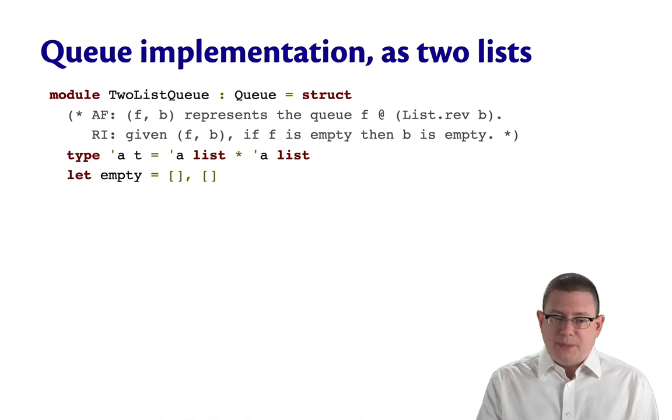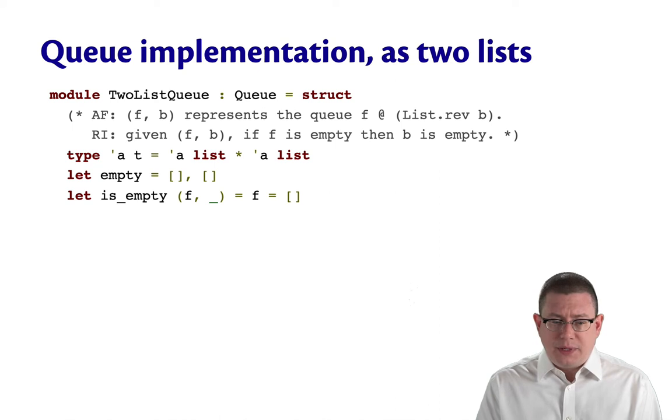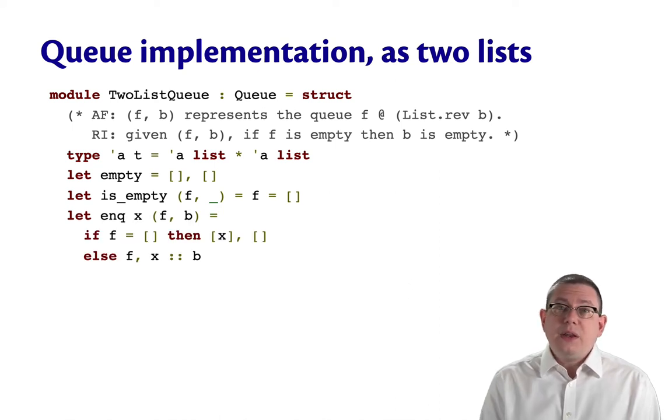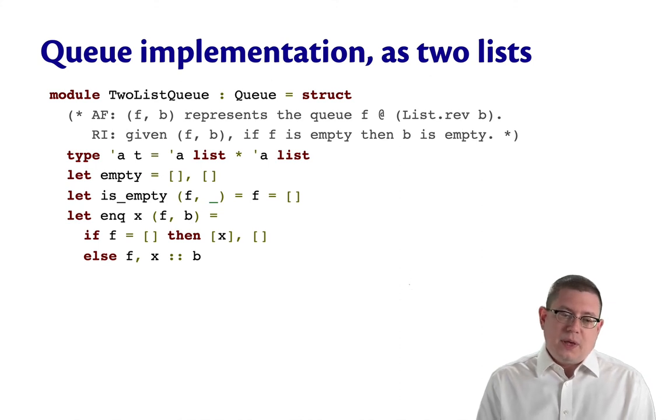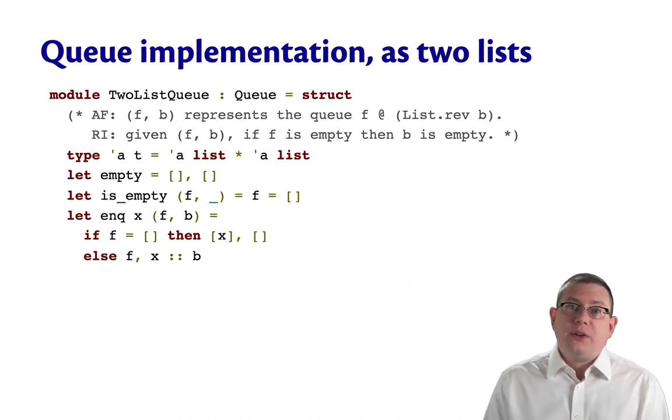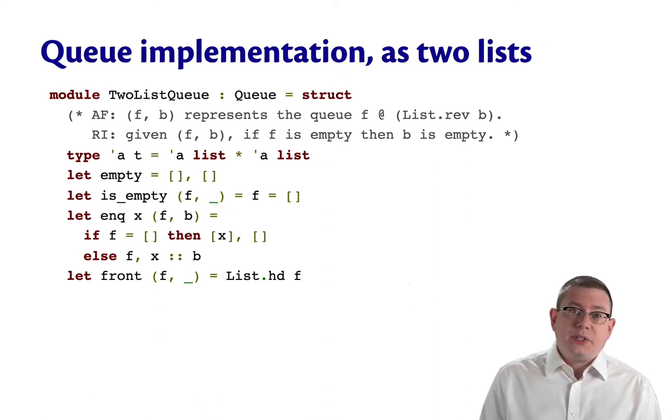The empty queue is just empty, empty. To figure out whether a queue is empty, well, all we have to do is look at the front list because of that rep invariant. It doesn't matter what the back is. If the front's empty, the back has to be empty. To enqueue an element onto the queue, we can check and see if the front is empty. If it is, then we have to leave the back empty, but we can put the new element into the front. Otherwise, we can cons that new element onto the back queue because we're guaranteed that the front is non-empty, so we're not going to accidentally violate the rep.